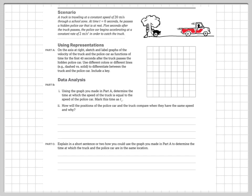Looking at what they've asked us to do, they want us to make a velocity versus time graph, and they've suggested the scaling on the graph. For the truck, it's really easy — it says he's traveling at a constant speed of 20 meters per second. For the first five seconds, the police car is going to remain at rest, so his graph says zero for the first five seconds, and then it accelerates, increasing speed by two meters per second each second.